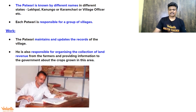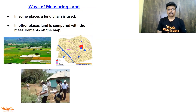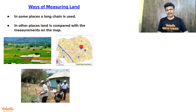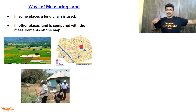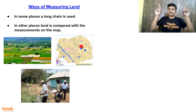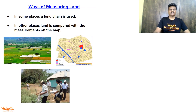Moving on — what are the ways in which land can be measured? An inch is too small. In some places they use a long chain for surveying and measurement. In other places they use map coordinates to identify the land.